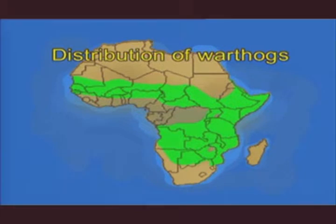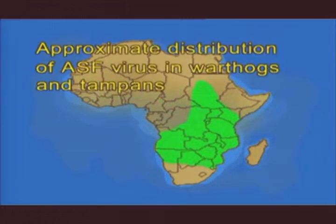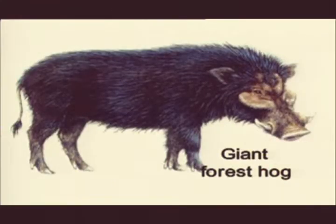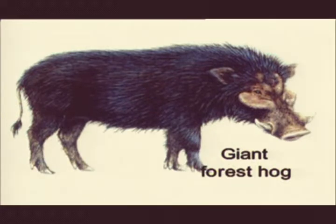Likewise, the status of wild suids with respect to infection with ASF virus is largely unknown. Therefore, with the exception of southern and eastern Africa, the maps you are now looking at showing the distribution of ASF virus in warthogs and tampans may not be entirely accurate. Other wild suids that may be involved in the maintenance of ASF virus are bush pigs that are members of the genus Potamochoerus and giant forest hogs of the genus Hylochoerus. Although these species are resistant to the pathogenic effects of ASF virus, their importance in maintaining ASF virus in the field is not well understood.